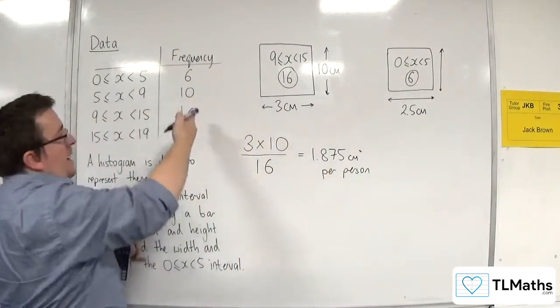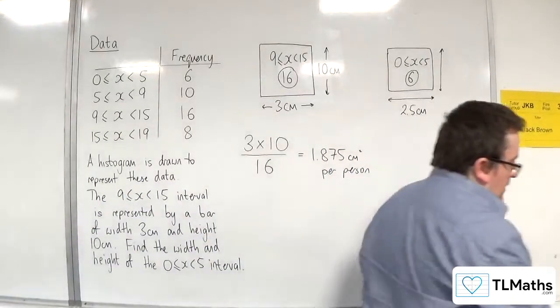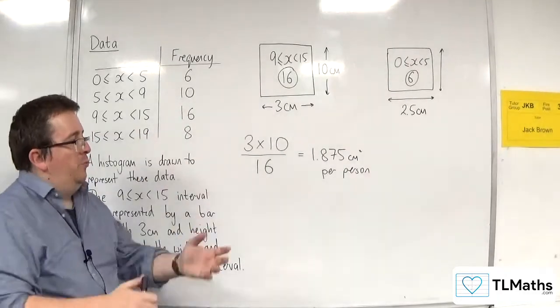So, that would be centimeters squared per person. Okay, I'm assuming that each of these is representing a person. It could be something else, but I'm just going to say it's a person because there's no context with this problem.